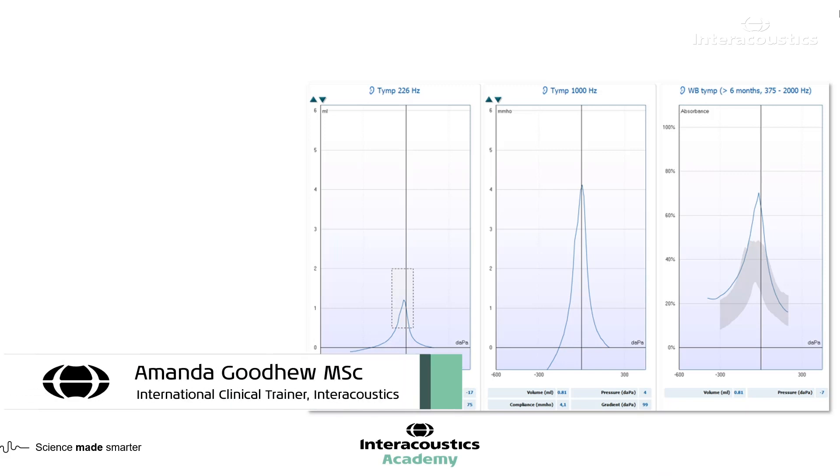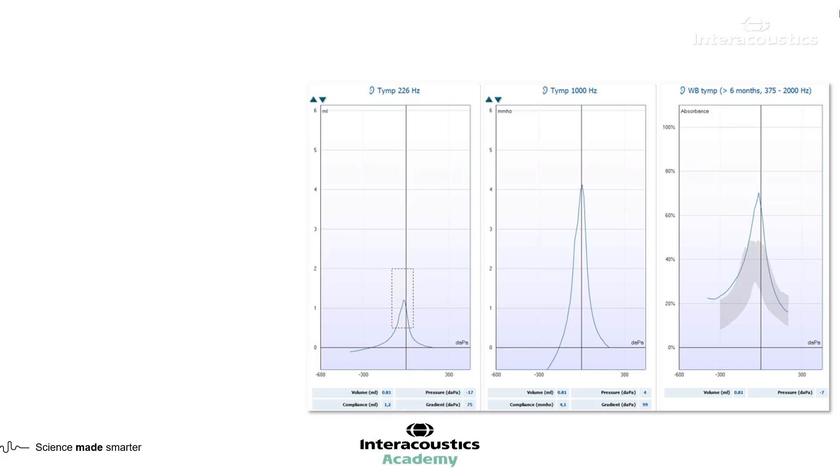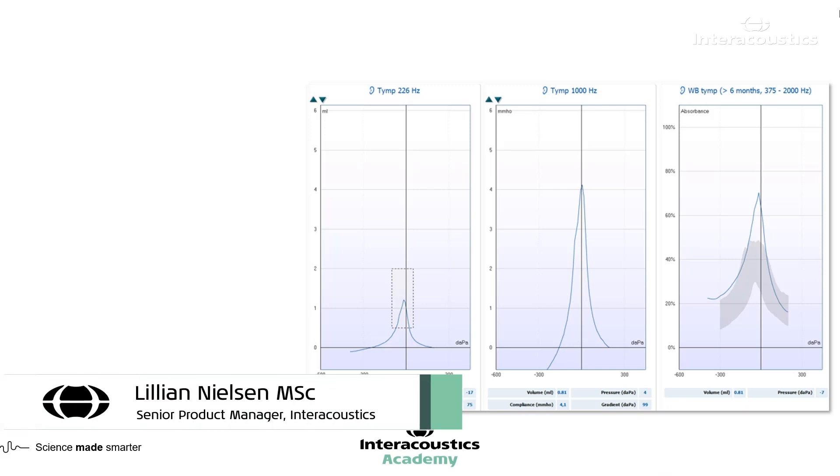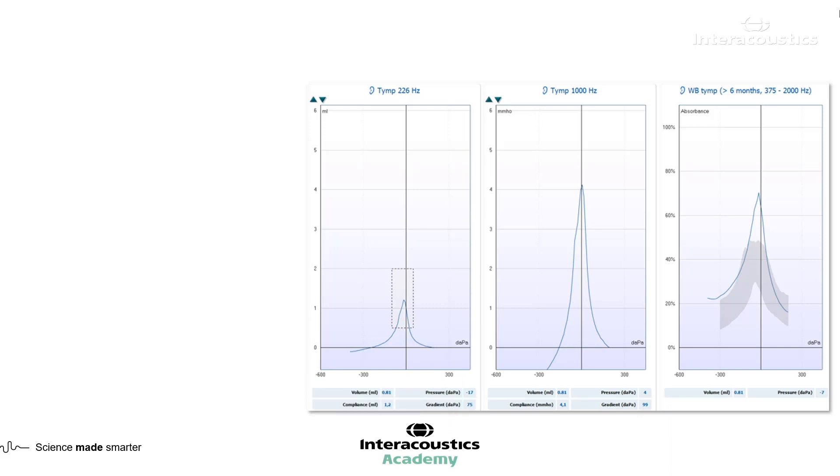Okay, and what could that potentially be if we're looking at a higher compliance, as it were? Well, in the case here, we would know that we have a movement that's greater than normal. So that could be a potential disarticulation in there, as we also know from the traditional classification of the 226.